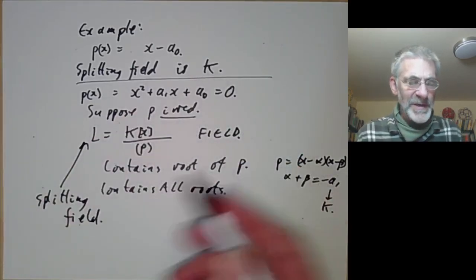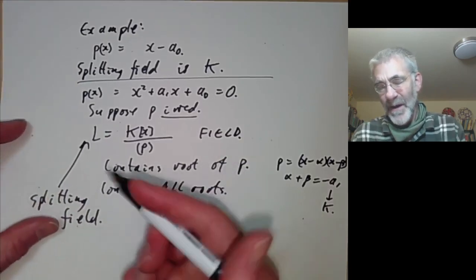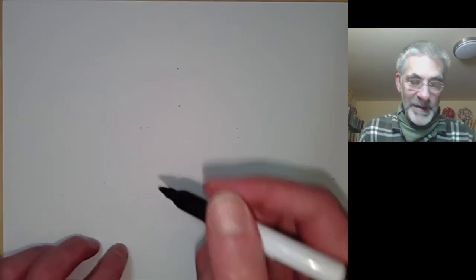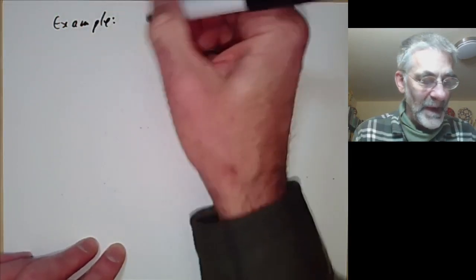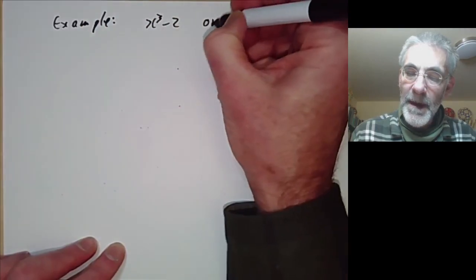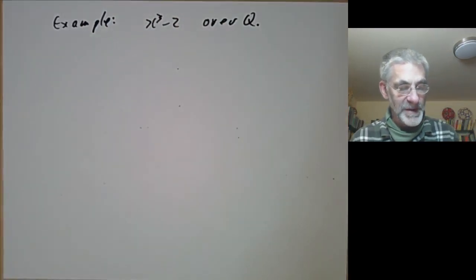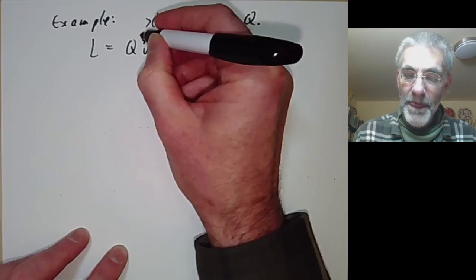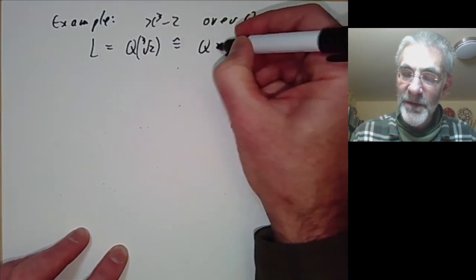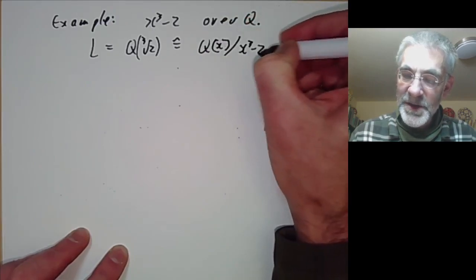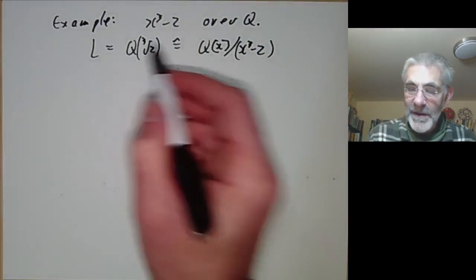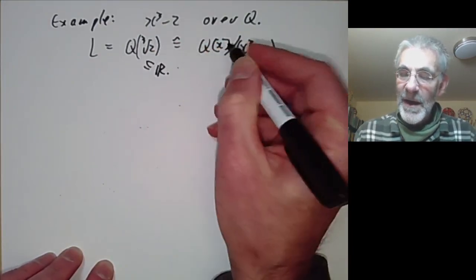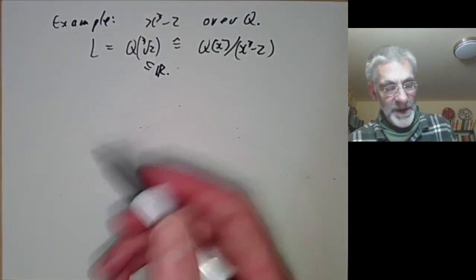For polynomials of degree 1 or 2, splitting fields aren't terribly interesting — you just get them by adjoining a root. Things become more complicated for polynomials of degree greater than 2. Let's look at x³ − 2 over the field of rational numbers. We can form a field L by adjoining the cube root of 2, or equivalently Q[x]/(x³ − 2), since x³ − 2 is irreducible. We can think of this as a subfield of the real numbers or as an abstract field.